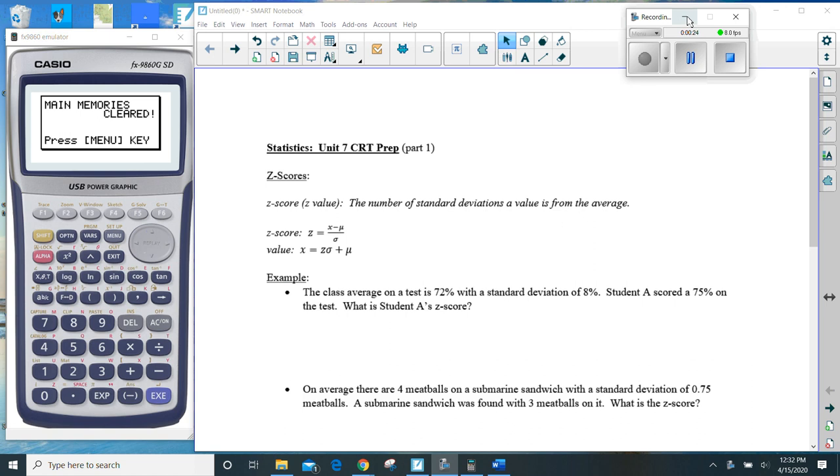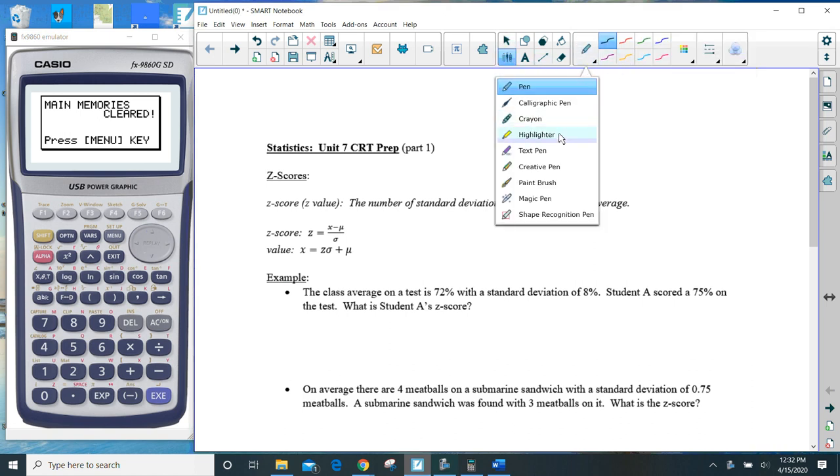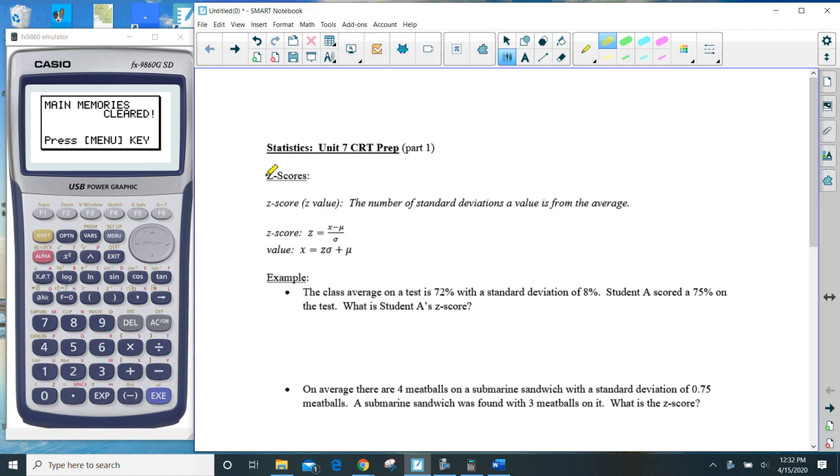What Part 1 is specifically talking about is Z-scores. And we have a definition of what a Z-score specifically is right here. It's the number of standard deviations away from the mean.